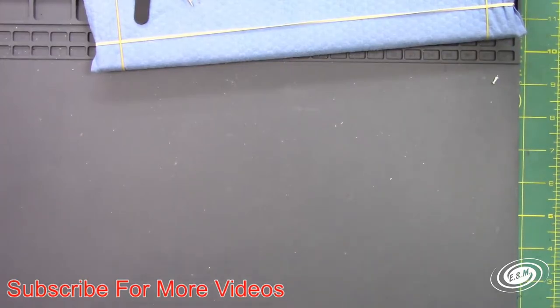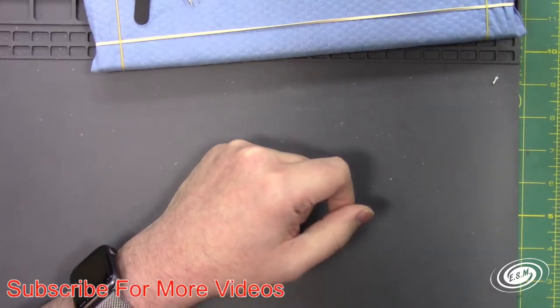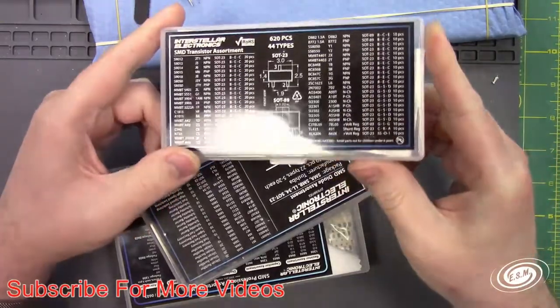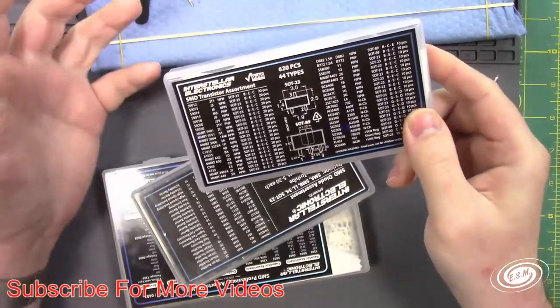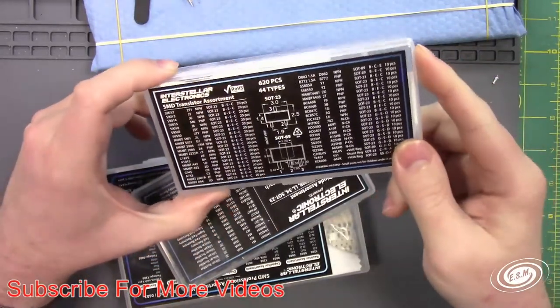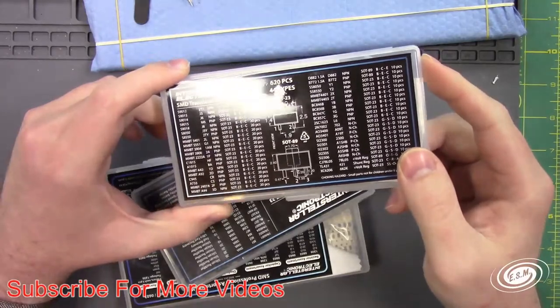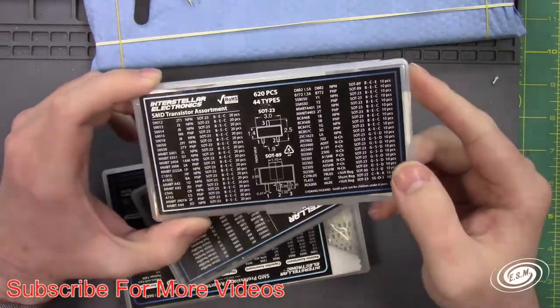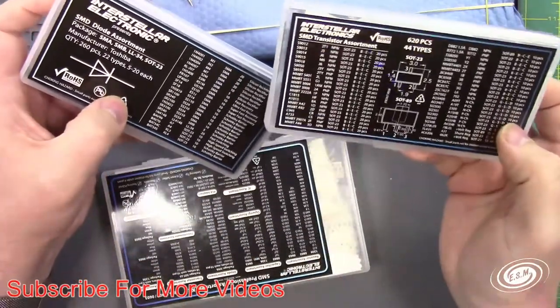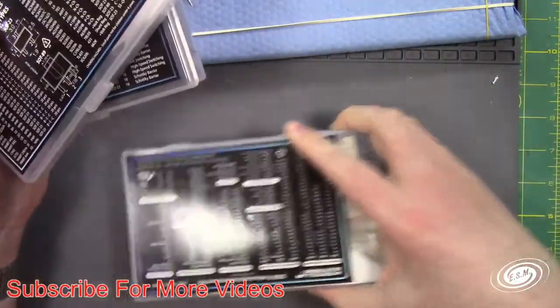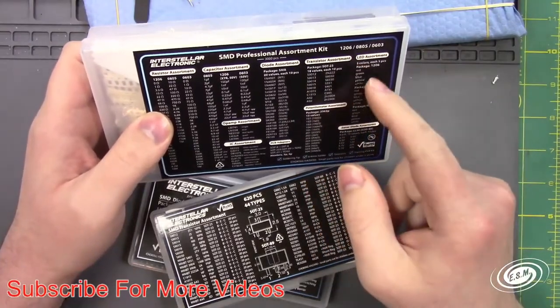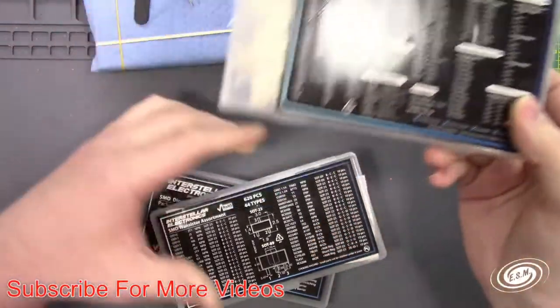I have another one of these with just generic surface mount components. I do want to mention Interstellar Electronics. If you want an assortment of just one type of any kind of assortment of surface mount parts, Interstellar Electronics sent me these. I want to say in either early 2019 or end of 2018 I received these. And this is just diodes, transistors. And this is a variety pack of 1206, 805, and 603s. This has already come in handy multiple times.